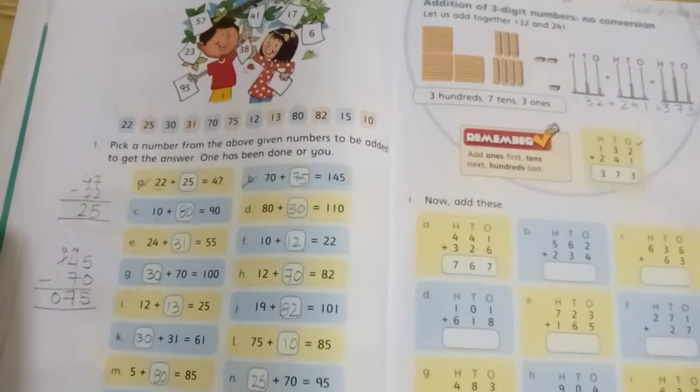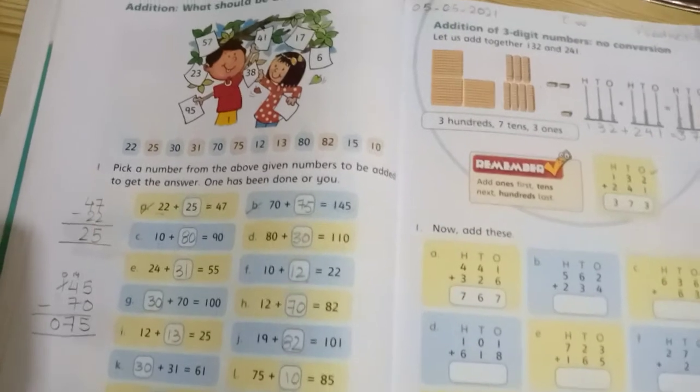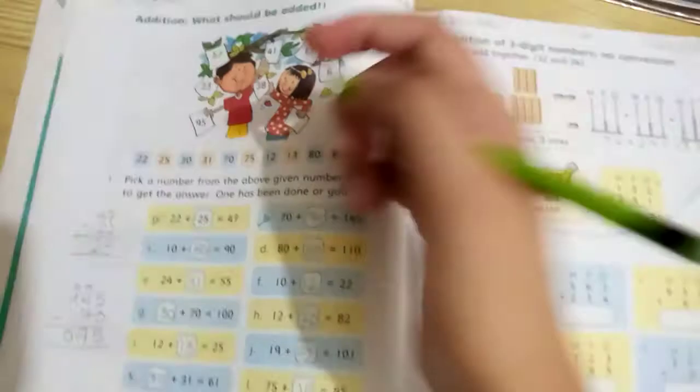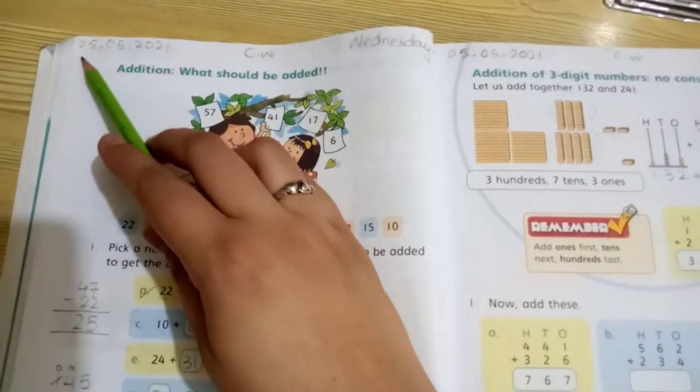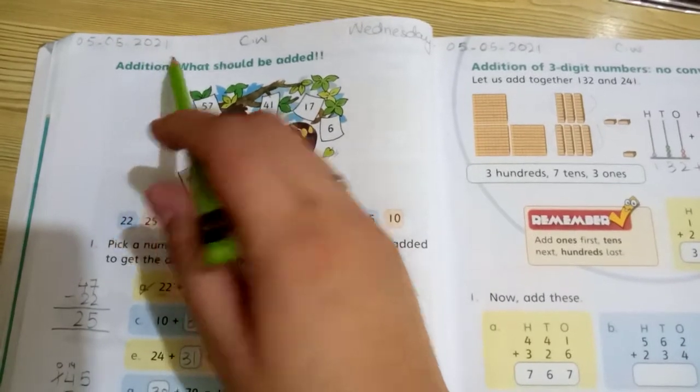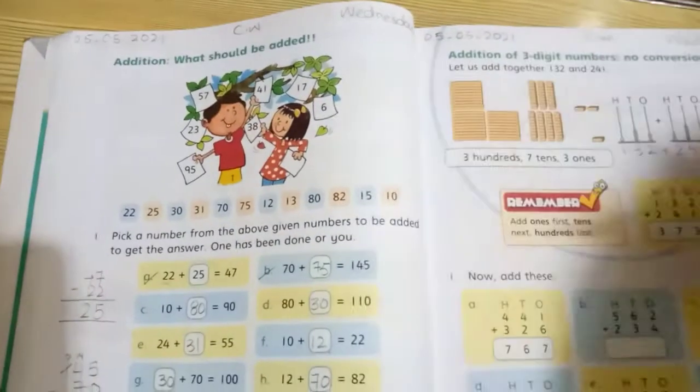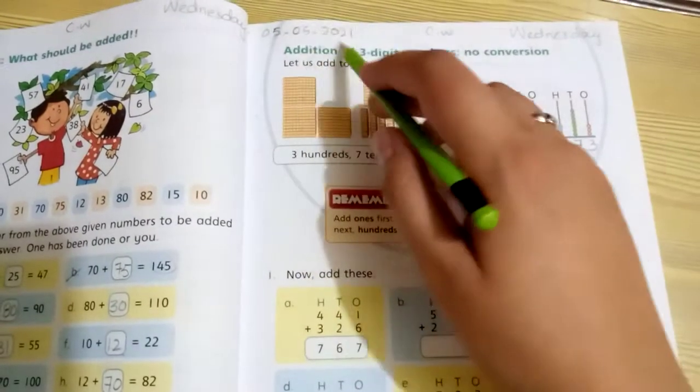Let's take out page 32 and write the date here: 05-05-2021, classwork and Wednesday. Write the same date on the next page: 05-05-2021, classwork and Wednesday.